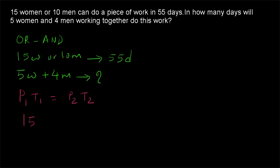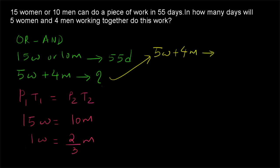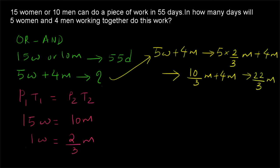We find: 15 women = 10 men, so 1 woman = 2/3 men. Substituting into the second group: 5 women + 4 men = 5 × (2/3) men + 4 men = 10/3 men + 4 men = 22/3 men. So P1 = 10 men and P2 = 22/3 men — both in the same unit.